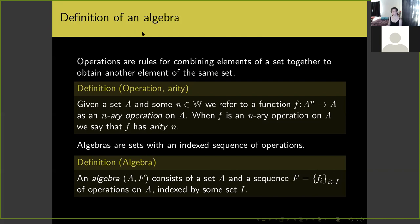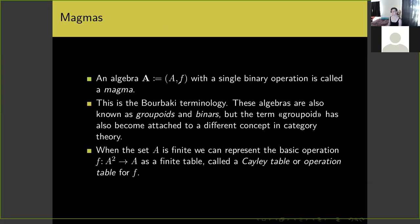Algebras are sets which come along with an indexed sequence of operations — the basic operations of the algebra. An algebra is an ordered pair (A, F) where A is the universe of the algebra and F is a sequence indexed by some set I of operations on A. An algebra with a single binary operation as its only basic operation is called a magma — just a set with a single binary operation defined on it.